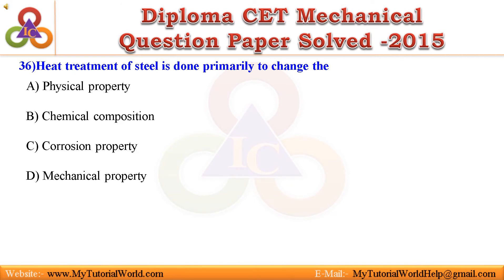Question 36. Heat treatment of steel is done primarily to change the: A. Physical property. B. Chemical composition. C. Corrosion property. D. Mechanical property. Answer is: Mechanical property.